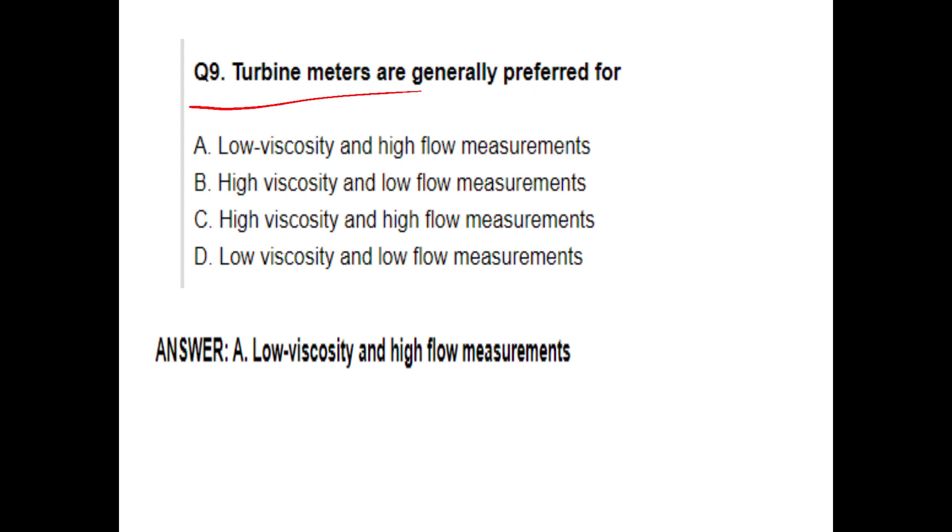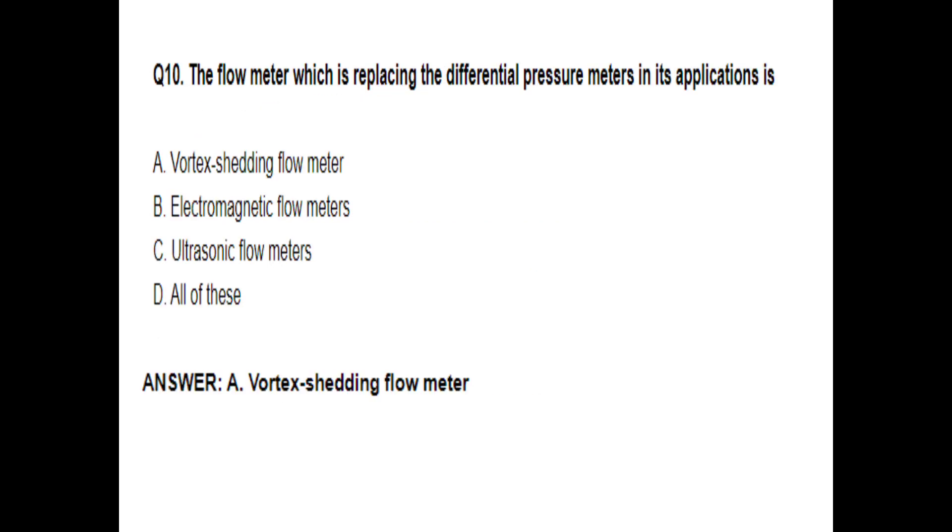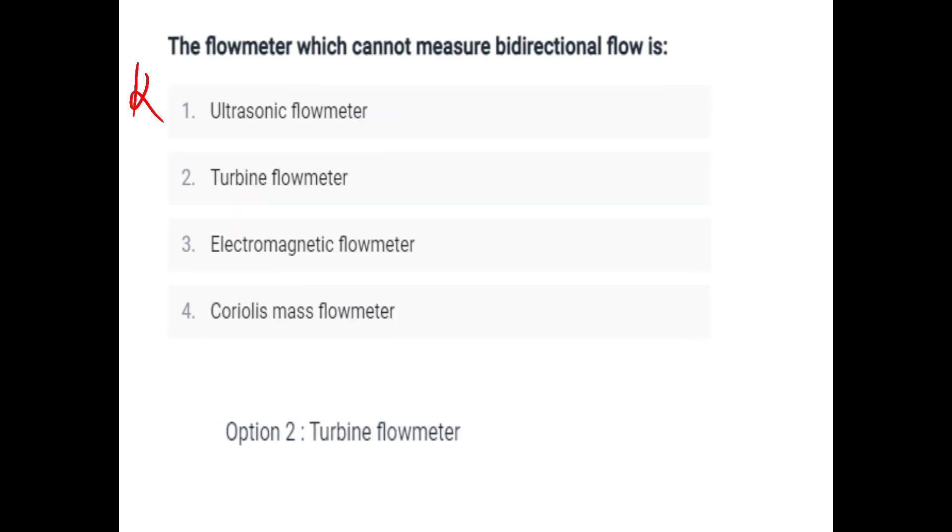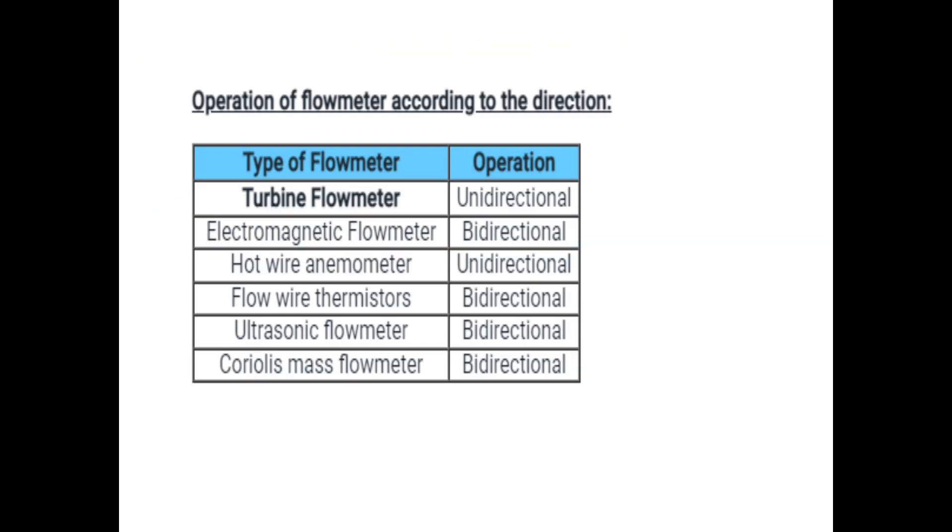Turbine meters are used for low viscosity and high flow measurements. The flow meter which is replacing the differential pressure meters in its application is option A, vortex shedding flow meter. The velocity at which the laminar flow stops is lower critical velocity. The flow meter which cannot measure bidirectional flow is turbine flow meter.